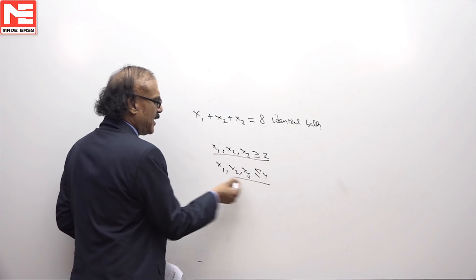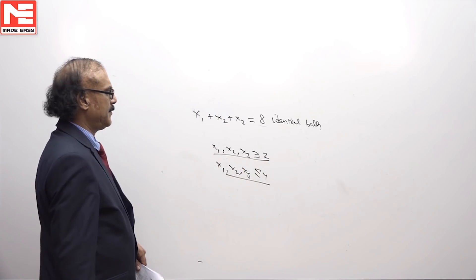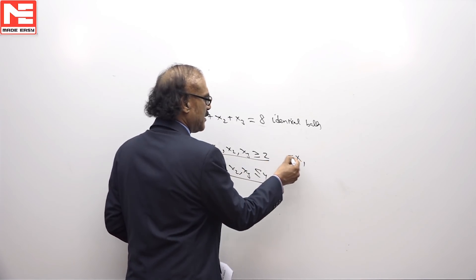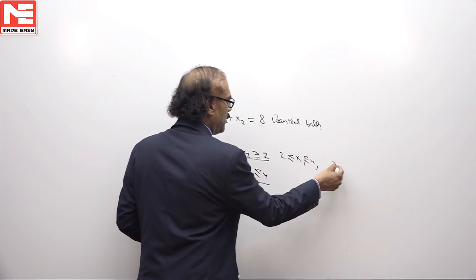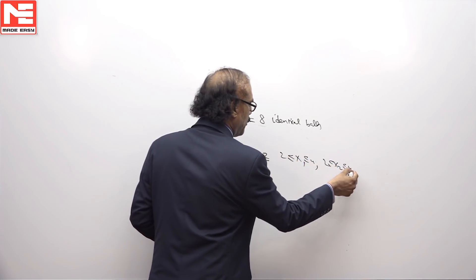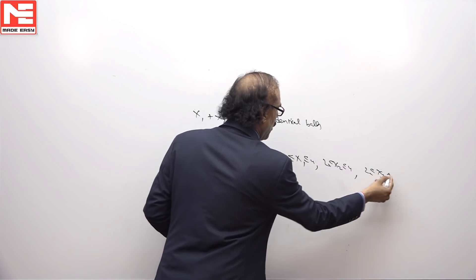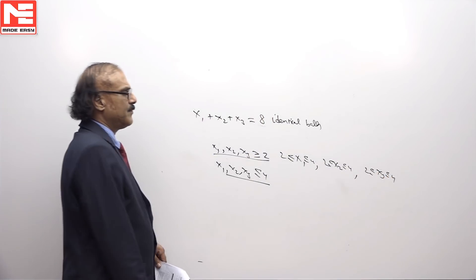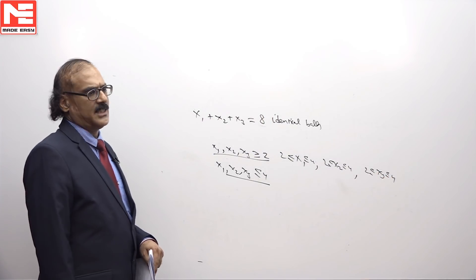It means there is a lower constraint as well as upper constraint. In other words, we can write this as the condition is x1 is between 2 and 4, x2 is between 2 and 4, x3 is also between 2 and 4. We wish to know how many ways can this be done.